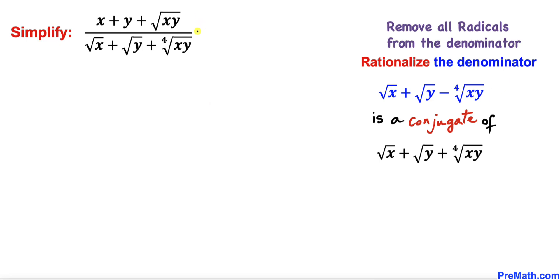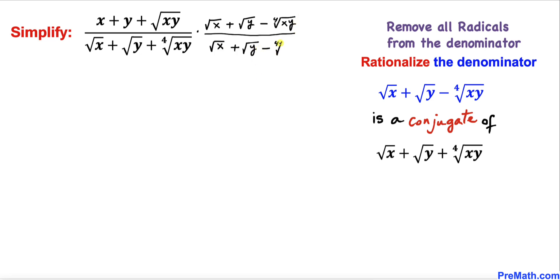So let's go ahead and multiply and divide by the conjugate: square root of x plus square root of y minus the fourth root of x times y, divided by the same conjugate. Now we are going to multiply these numerators and denominators.